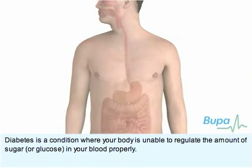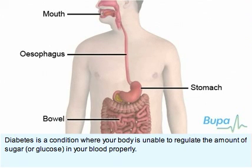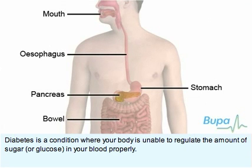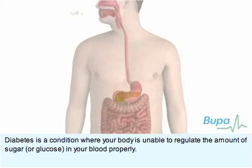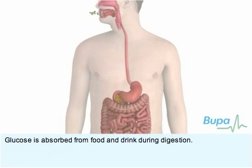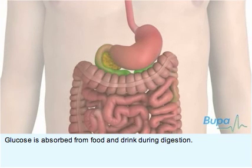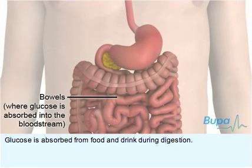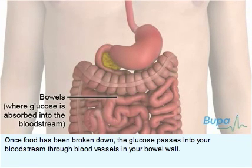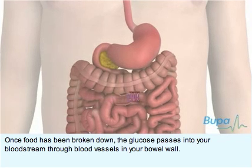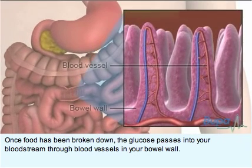Diabetes is a condition where your body is unable to regulate the amount of sugar or glucose in your blood properly. Glucose is absorbed from food and drink during digestion. Once food has been broken down, the glucose passes into your bloodstream through blood vessels in your bowel wall.